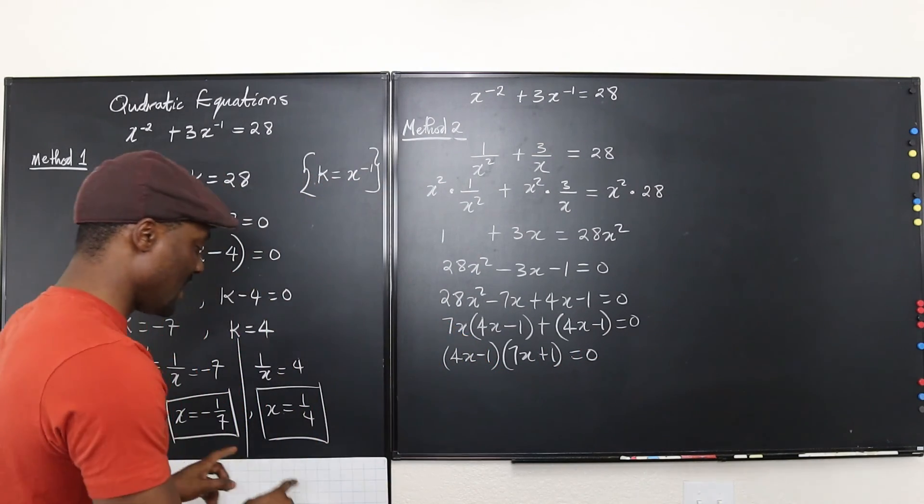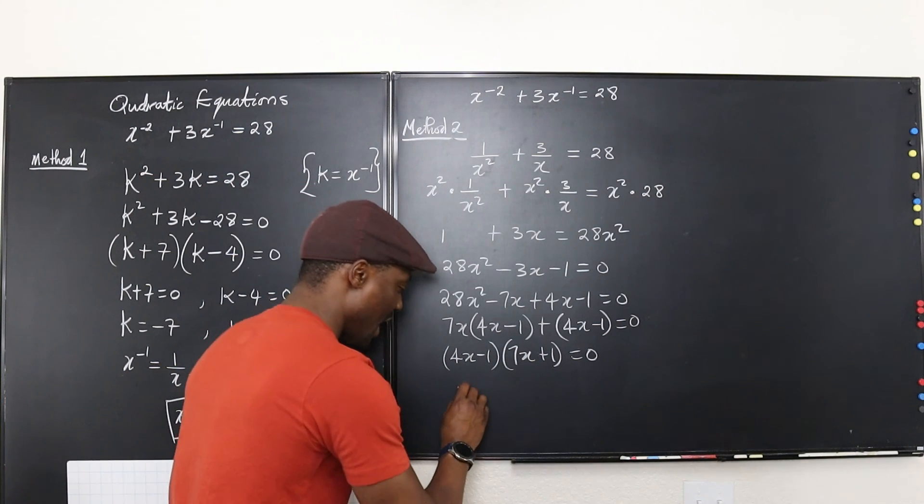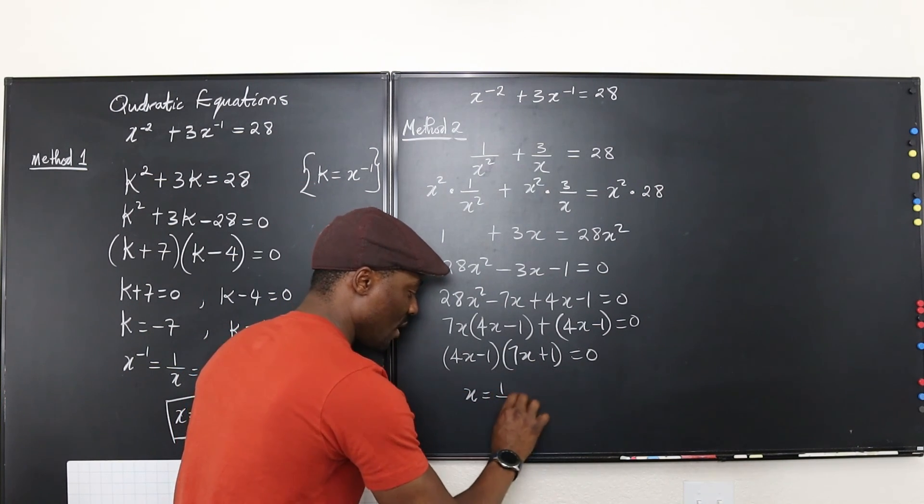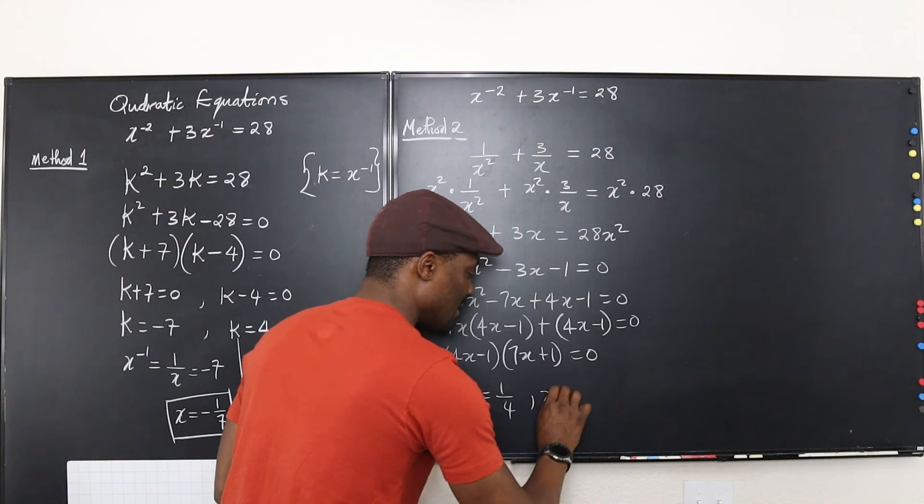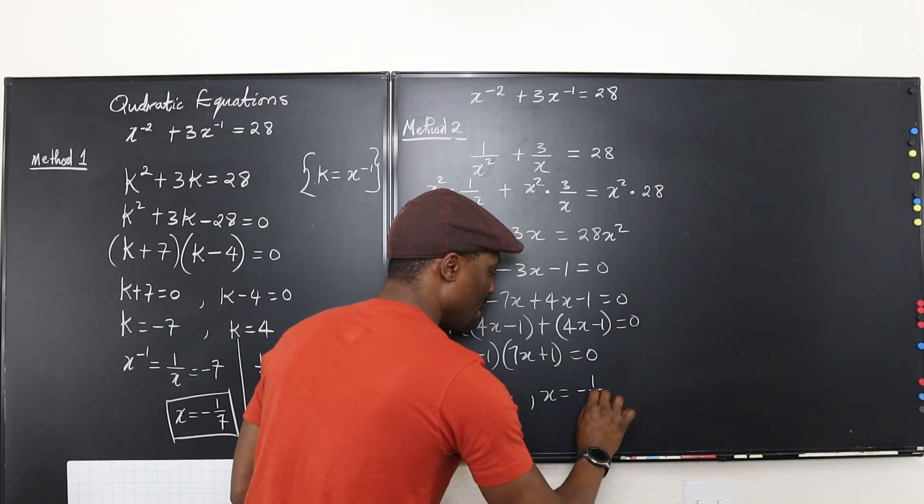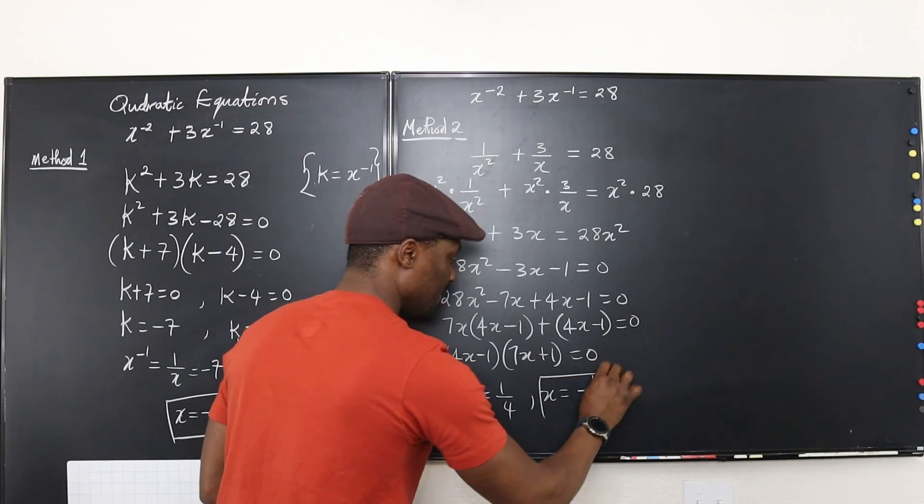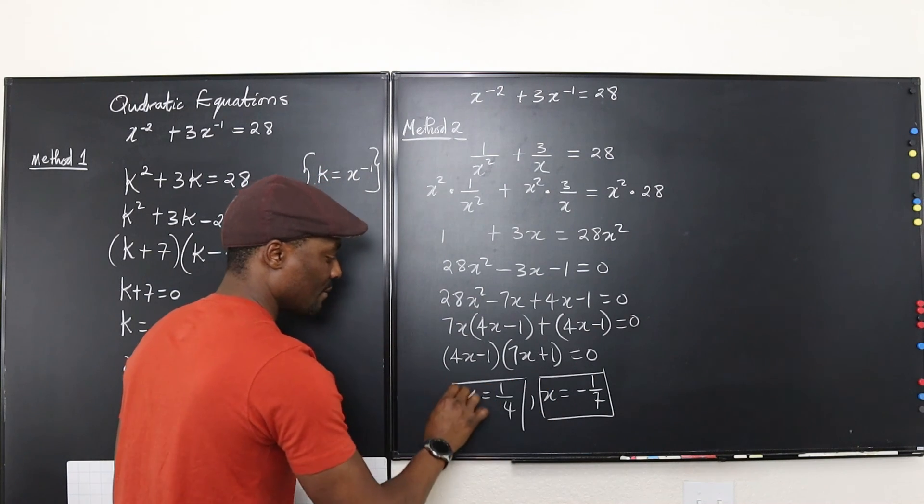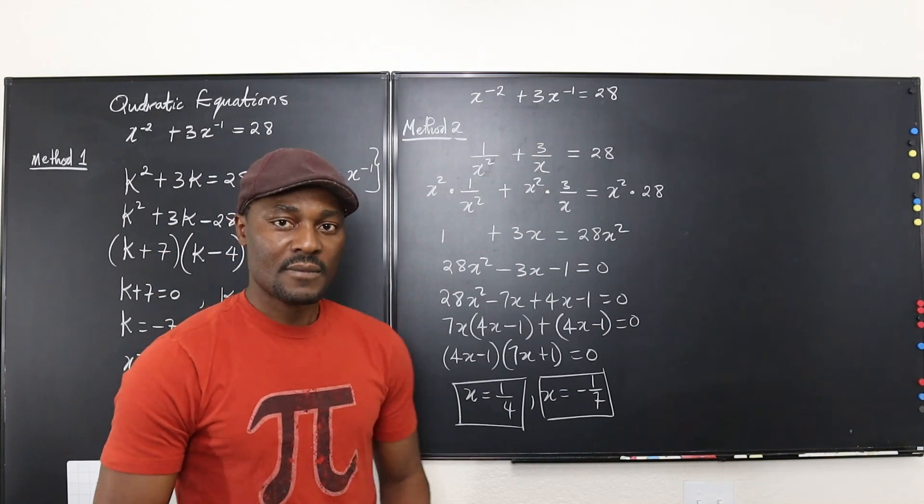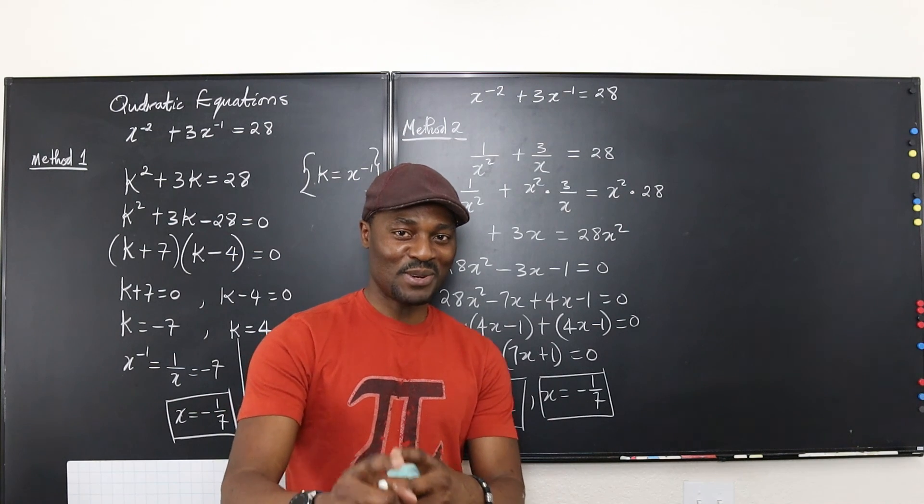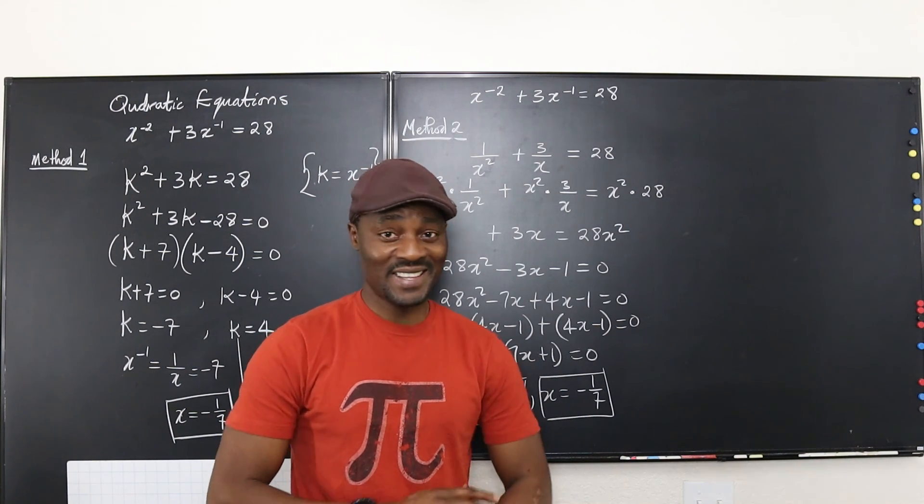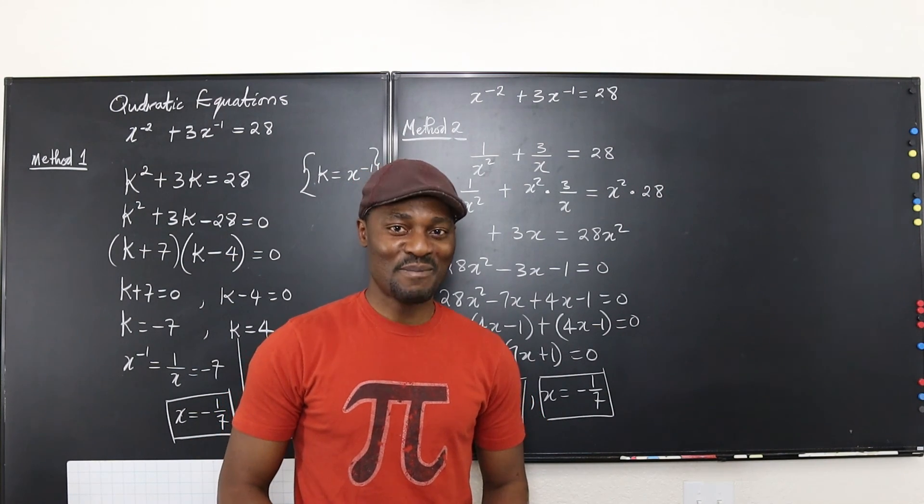As you can see, we're going to get the same answers that we got here. You're going to have x = 1/4 or x = -1/7. I'll see you in the next video. Don't stop learning because those who stopped learning have stopped living. Bye-bye.